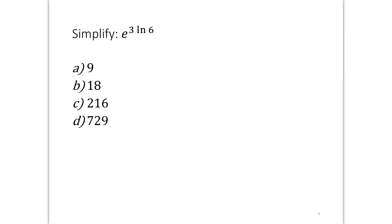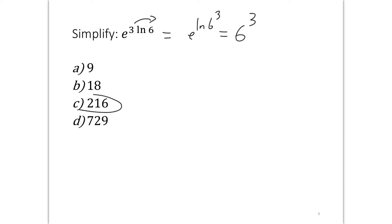Let's try one here: simplify e to the power of 3 ln 6. Pause the video and think about the answer. We can rewrite this as e to the ln 6 to the power of 3, bringing the 3 up as an exponent using log rules. Since e and ln are inverses of each other, we just get 6 to the power of 3, which is 216.